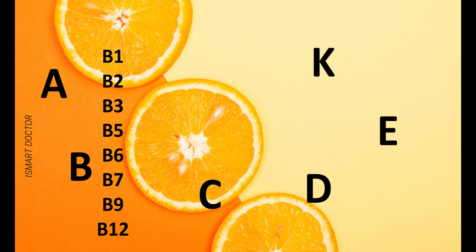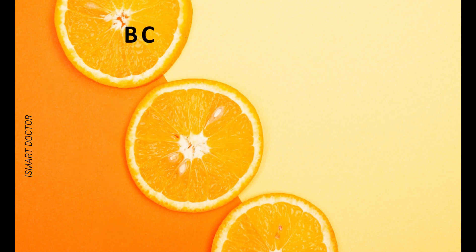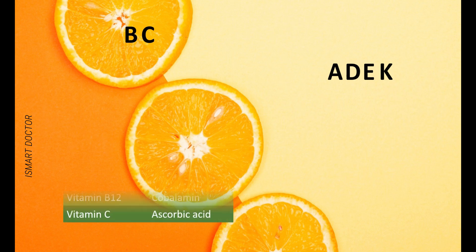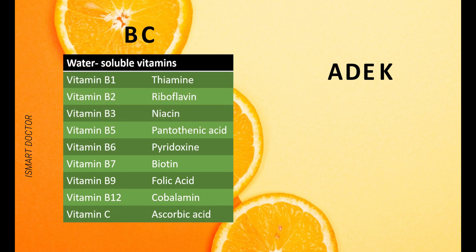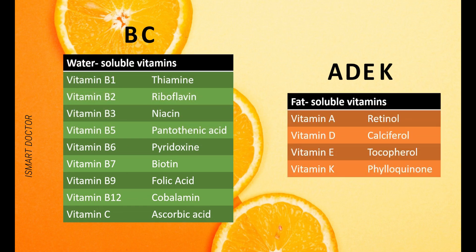We have vitamins A, B, C, D, E, and K. Vitamins are of two types: fat-soluble and water-soluble. B and C are water-soluble vitamins, and A, D, E, K are fat-soluble vitamins.